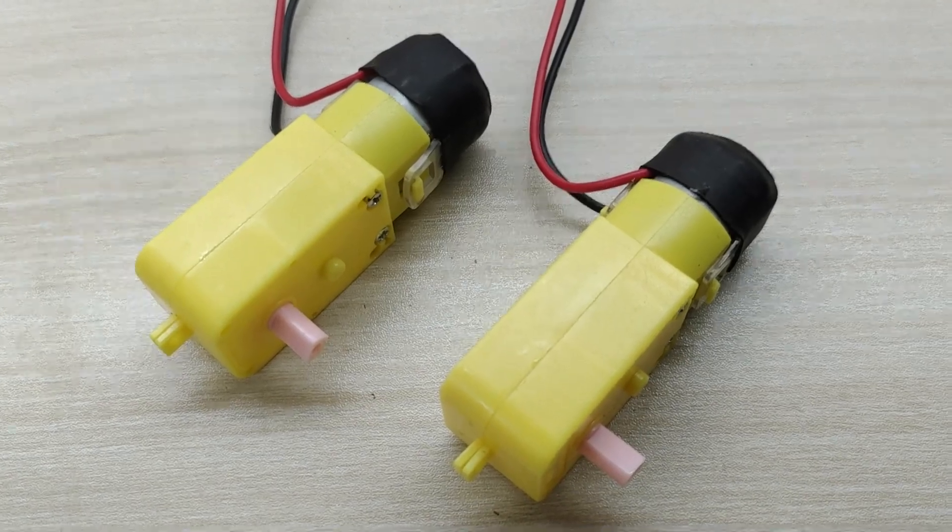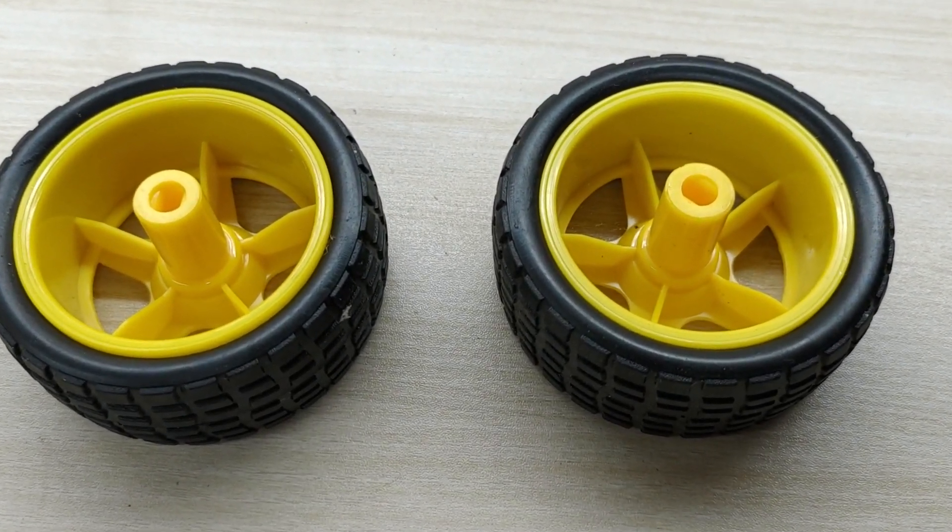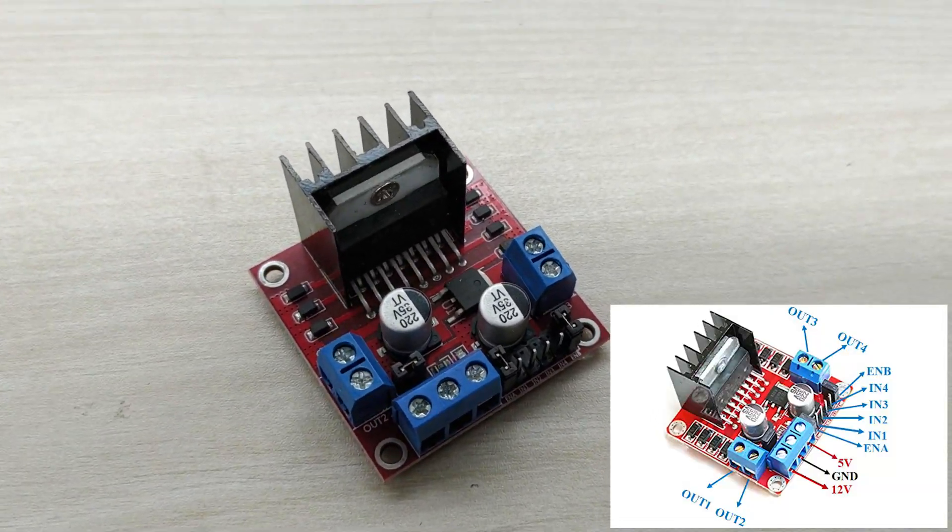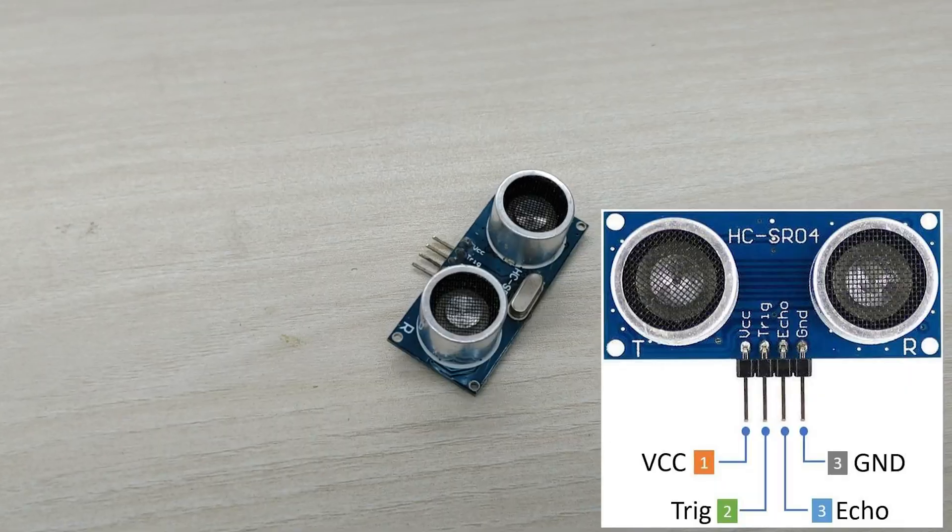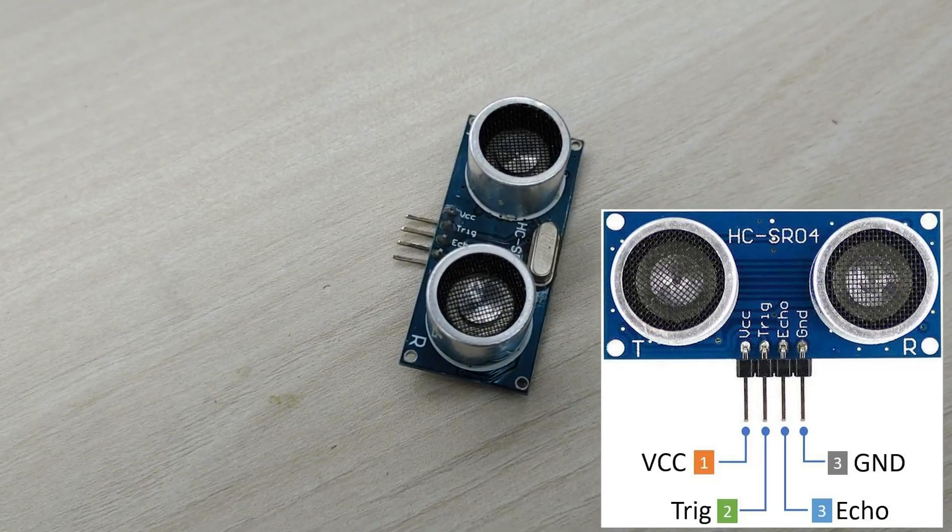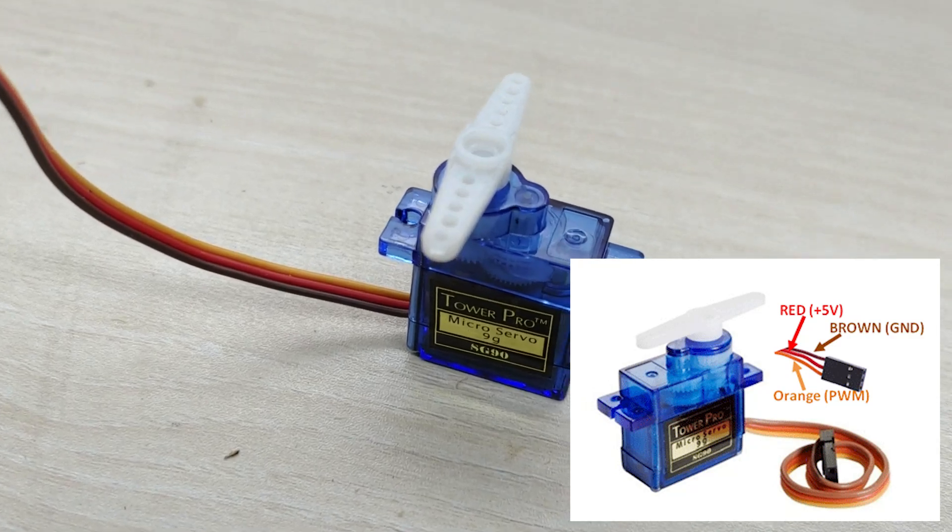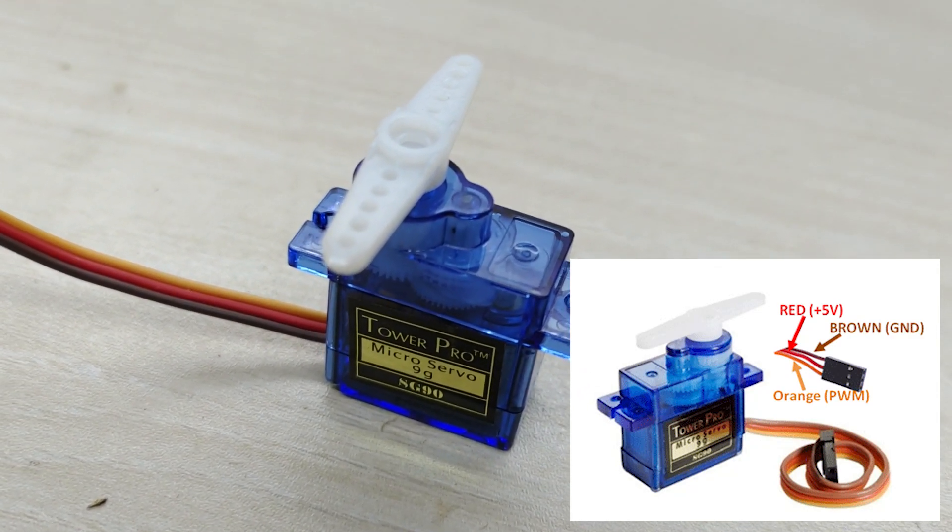For this project, you need two numbers of geared motors, two numbers of 65mm diameter wheels, Arduino UNO board, L298N DC motor driver module, HC-SR04 ultrasonic sensor, SG90 servo motor and a caster wheel as the main components.